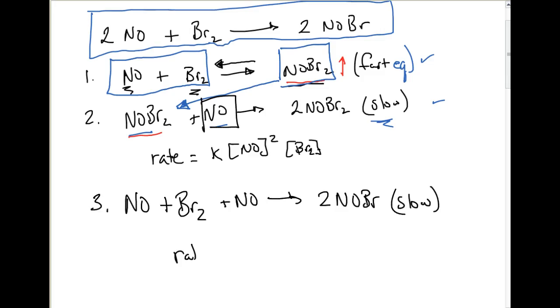So our rate law becomes rate is equal to k, we have NO NO, so we have NO second order and then we have Br2 first order.